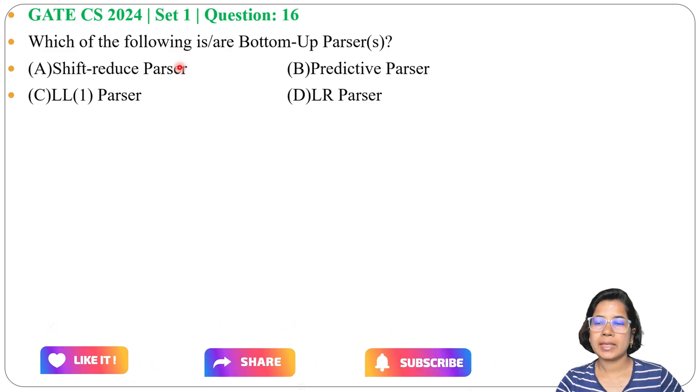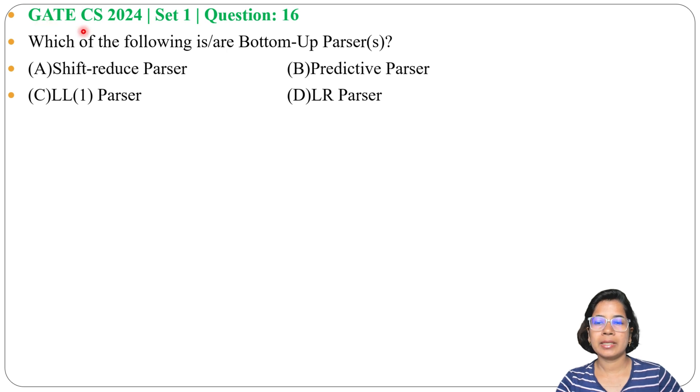Let's solve a previous question on parsing. This question was asked in GATE CS 2024, Set 1, Question Number 16. Which of the following are bottom-up parsers? Four options with four parsers are given.